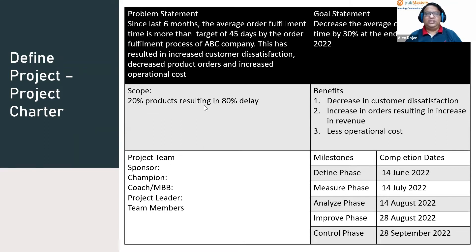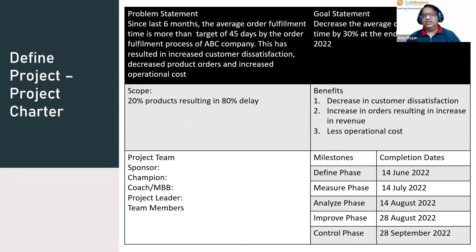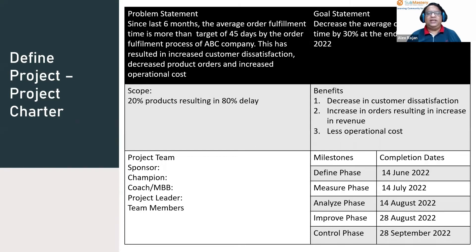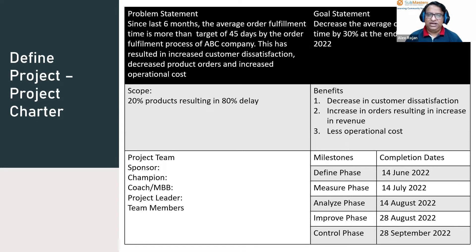The scope of the project defines where the project process will focus. We may not be able to focus on all delays or all products, so we try to focus on which products are resulting in 80% of the delay. That is where the Pareto principle is used — focusing on the main pain areas contributing to the problem. So we focus on the 20% of products resulting in 80% of the delay.